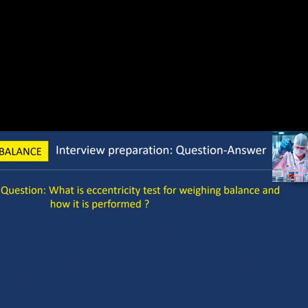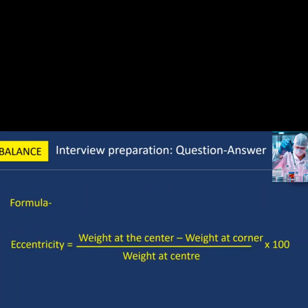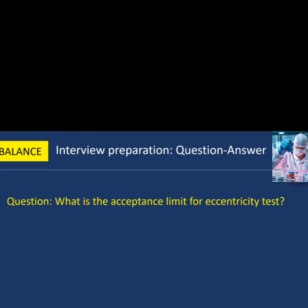Next question: what is the eccentricity test for a weighing balance and how is it performed? For the eccentricity test, a weight more than 30% of the balance capacity is selected and placed at the center and all corners of the weighing pan to check eccentricity. As shown in the figure, 5 positions are used: position 1 is the center, and positions 2, 3, 4, and 5 are the corners. Formula: Eccentricity = (Weight at Center − Weight at Corner) ÷ Weight at Center × 100. The acceptance limit for the eccentricity test is not more than 0.05%.